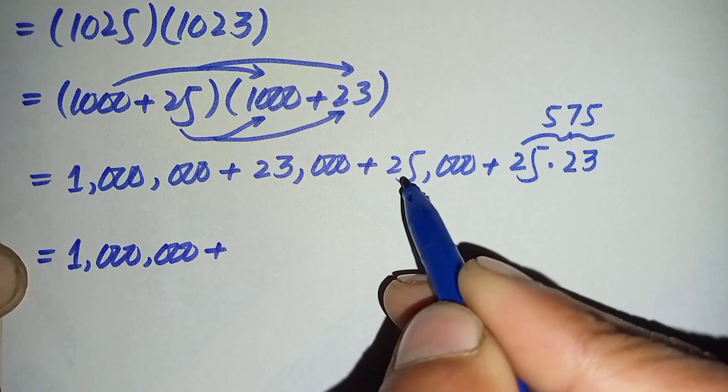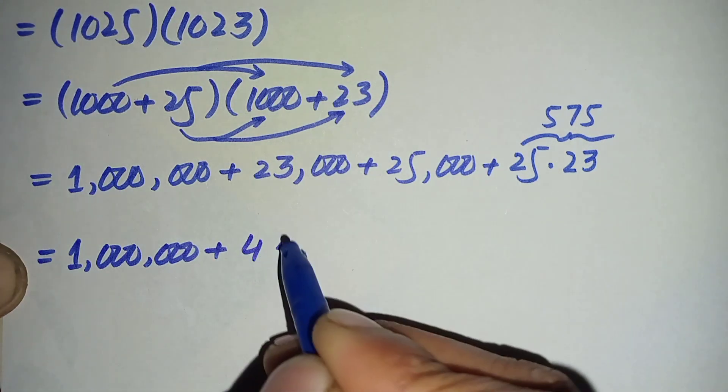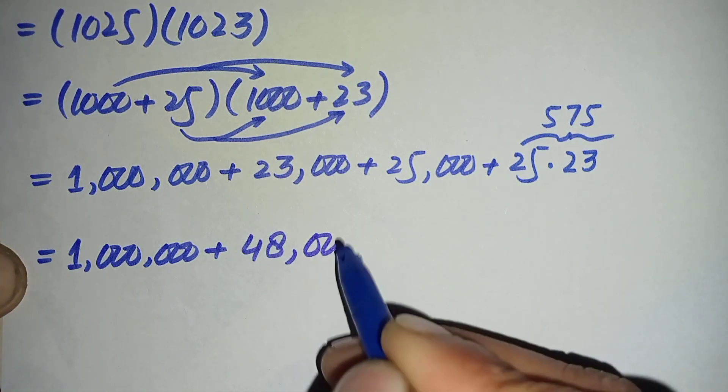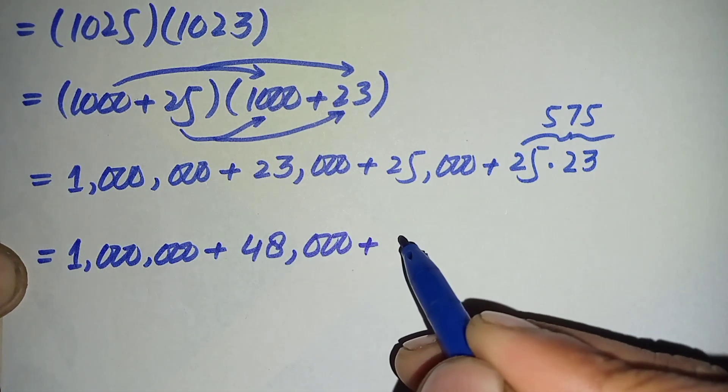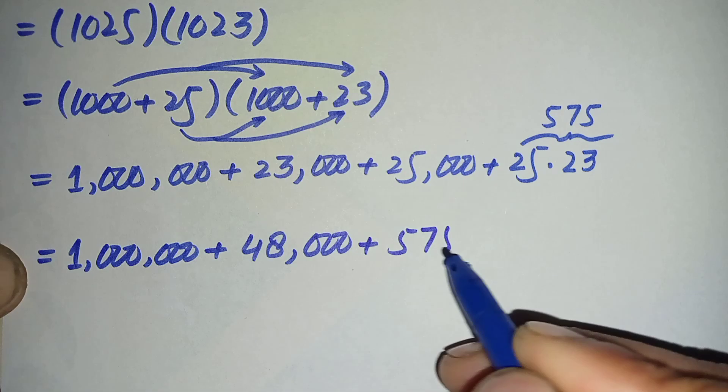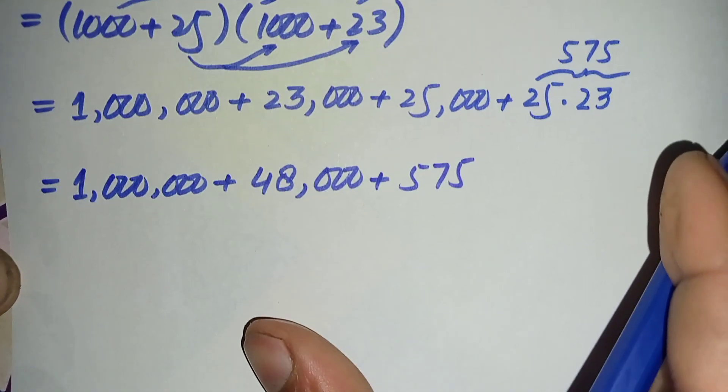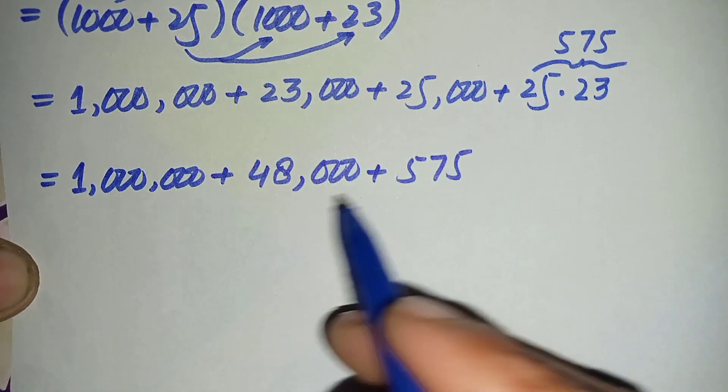Now we will add these three numbers. Here we will start from the ones position. 5 plus 0 plus 0 is 5, 7 plus 0 plus 0 is 7, 5 plus 0 plus 0 is 5.